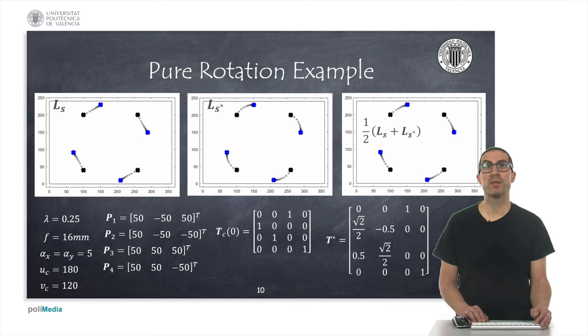Here I show an example with the different control proposals. Below, from left to right, I indicate the control parameter lambda, as well as the camera intrinsic parameters, the 3D position of 4 points and its initial transformation matrix of the camera's reference frame, and also the final transformation matrix to achieve.